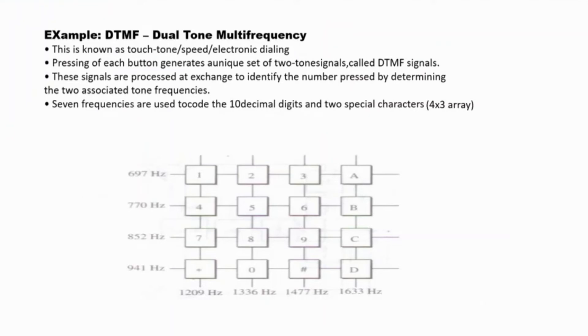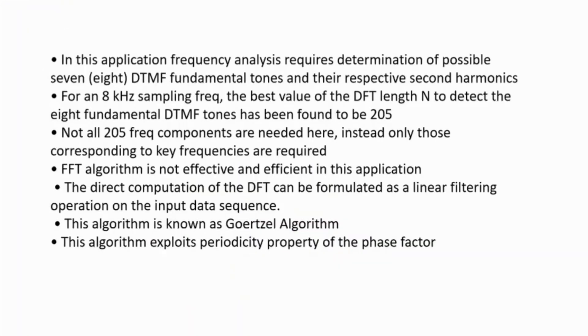Example: DTMF based on multiple frequencies. This is known as touch-tone or electronic dialing. Pressing each button generates a unique pair of two sinusoidal signals called DTMF signals. These signals are processed to identify the numbers pressed by determining the two absolute distinct frequencies. Eight frequencies are used to encode the 10 decimals, asterisk, and two special characters. For an 8kHz sampling rate, the best value of DFT length to decode the 8 fundamental DTMF tones has been found suitable.